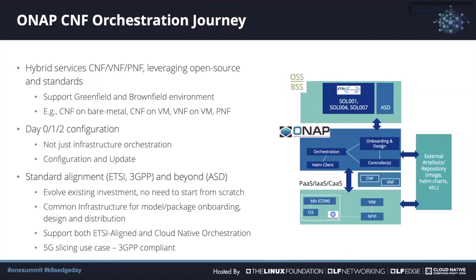ONAP is also a 5G network slicing management platform which conforms to 3GPP standards, so it can work with other open source 5G slicing controllers that conform to 3GPP with some integration efforts. Looking at the diagram, ONAP supports onboarding of ETSI SOL001 CNF, VNF, and PNF network service models; SOL004 for VNF and CNF packaging; and ETSI SOL007 for network service packaging. It will support the Application Service Descriptor for CNF in the near future. ONAP orchestrates CNF and other network resources by interfacing with the platform infrastructure and container edge services such as Kubernetes, VIM, and NFVI.